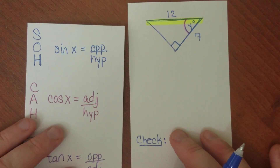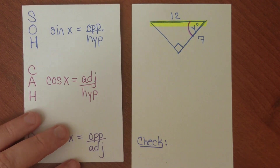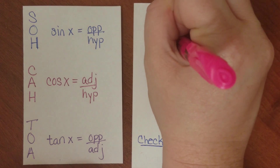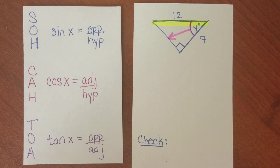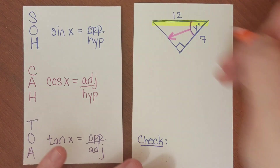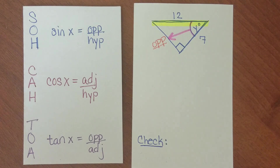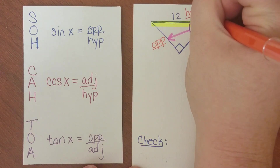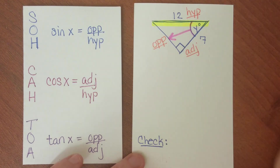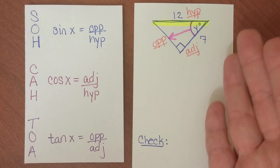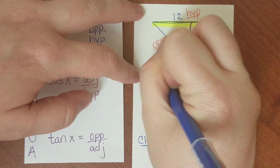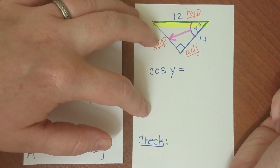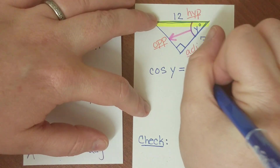Here's our next problem. If you picture an arrow shooting straight out from your reference angle, that's going to be your opposite side. This would be the hypotenuse, and this would be the adjacent side. We want to know which trig function relates the angle to its adjacent side and hypotenuse — that's cosine, since adjacent over hypotenuse deals with cosine. So the cosine of y equals adjacent over hypotenuse, which is 7 over 12.